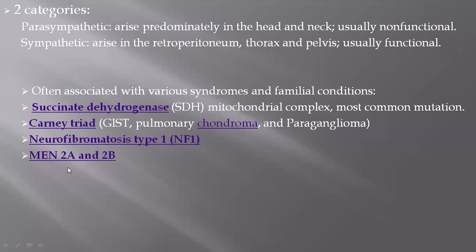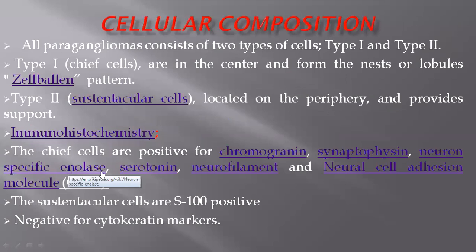The other two syndromes associated with paraganglioma are the Carney triad — which includes GIST, pulmonary chondroma, and paraganglioma — as well as neurofibromatosis type 1, MEN 2A, and MEN 2B.